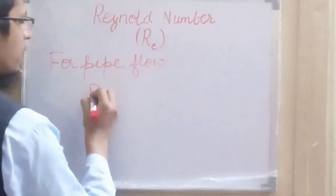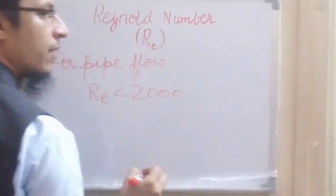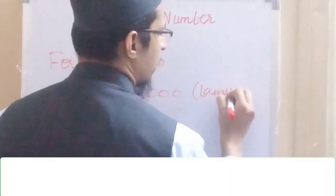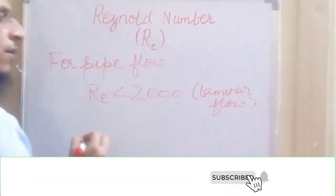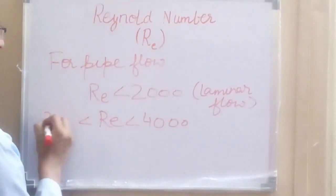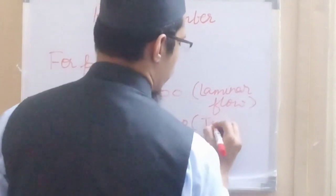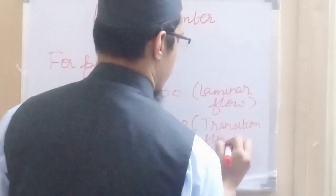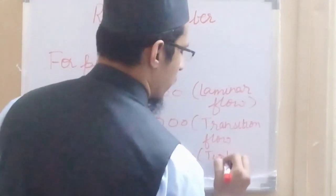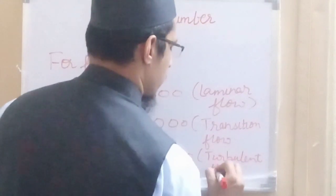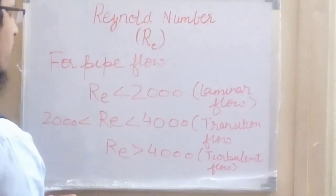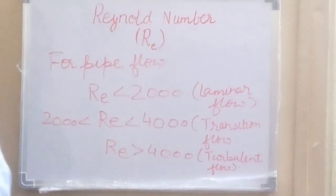For pipe flow: if the Reynolds number is less than 2000 it is considered to be laminar flow; if the Reynolds number is between 2000 and 4000 it is transition flow; and if the Reynolds number is greater than 4000 it is considered turbulent flow. The Reynolds number at which the flow starts changing from laminar to turbulent is known as the critical Reynolds number.